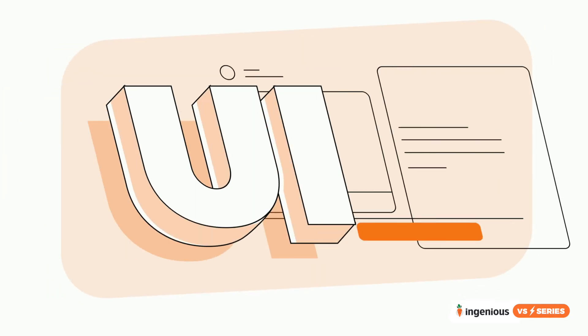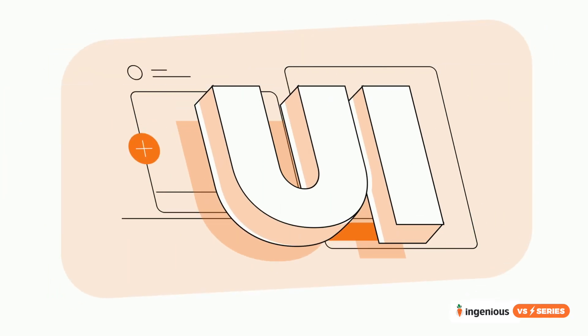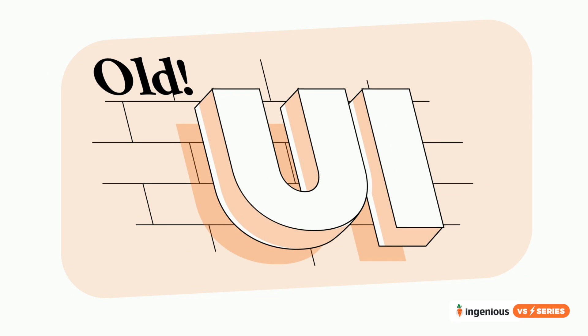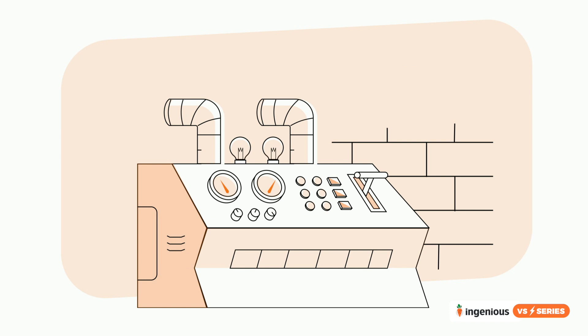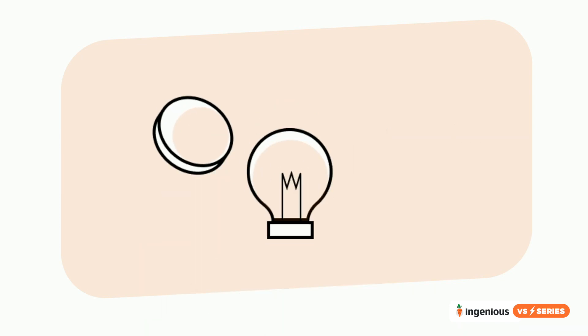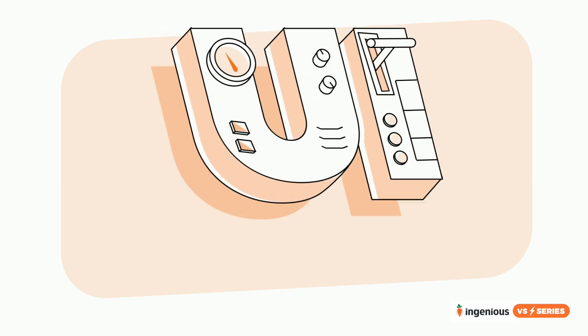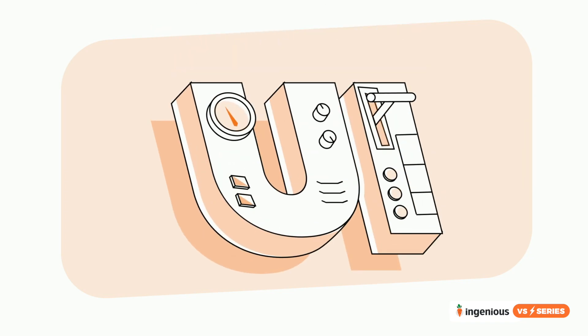For example, when I say the word button, you'll probably be thinking about a digital button. But that's a bias right there. UI isn't just a digital concept, and it's not new at all. Think, for example, about any factory working with huge industrial machinery. They also have buttons and lights showing feedback and big knobs which they can turn up or down in order to give the machine an order. Well, that's also a user interface.